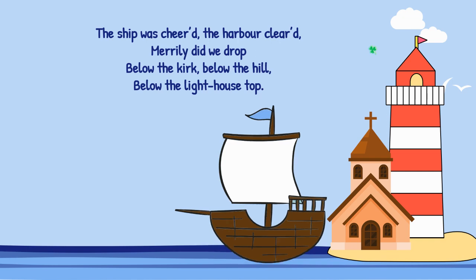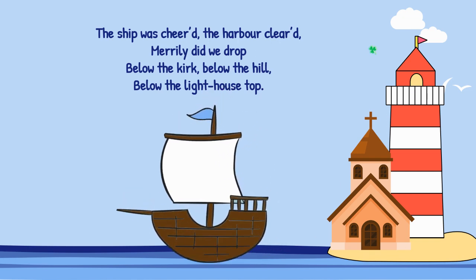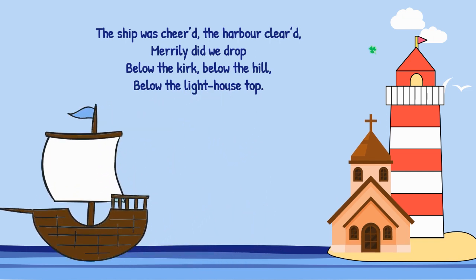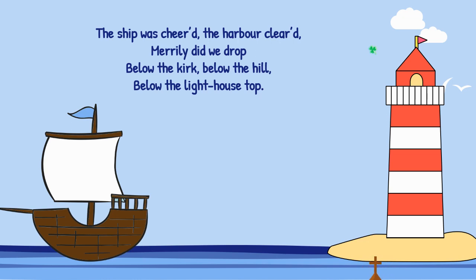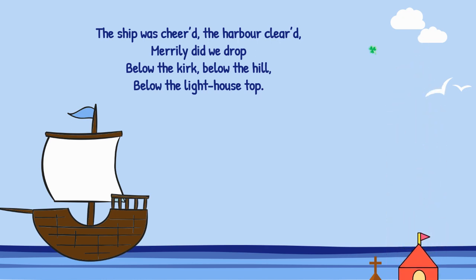And the story begins: 'The ship was cheered, the harbour cleared. Merrily did we drop below the kirk' — kirk meaning a church — 'below the hill, below the lighthouse top.' Here Coleridge is referring to the roundness of the earth: as they are moving, things seem to get lower. This is because of the form of the earth, and there are other facts about the science of the earth across the poem.